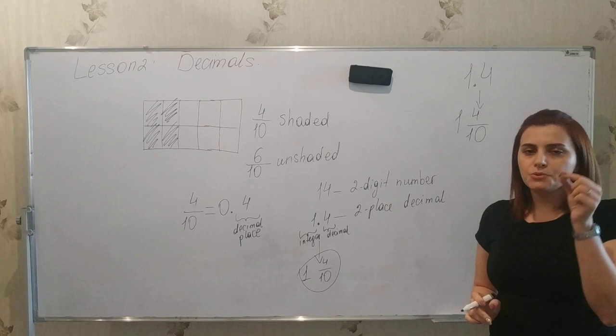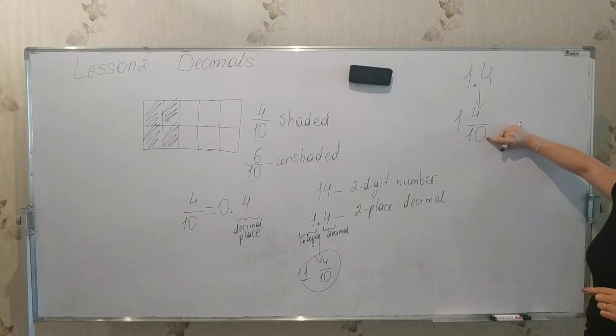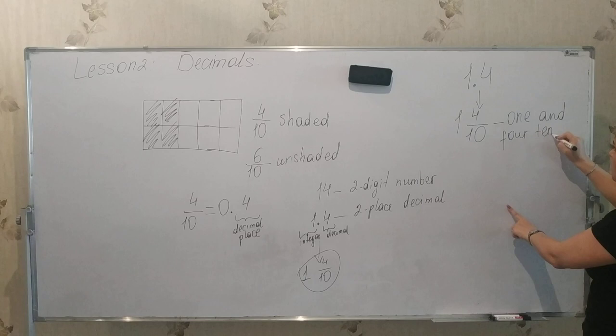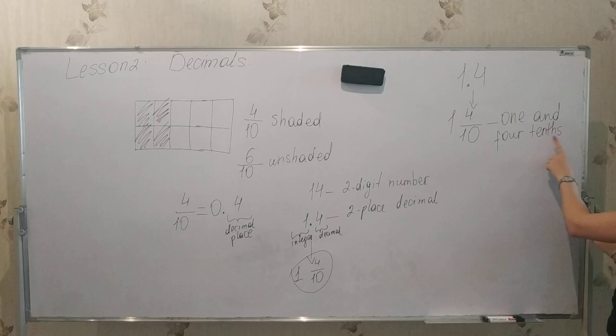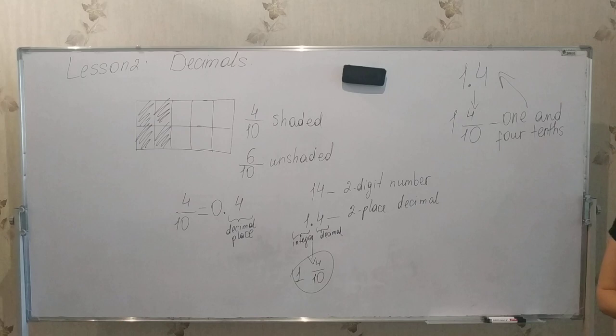We already know how to read fractions: we start from the numerator and say it as a cardinal number, then the denominator as an ordinal number — four tenths. If we have a whole part, we say one and four tenths. You know why it is 'tenths' with an S? Because we have four tenths, not one tenth. The same rule applies when we read decimals.